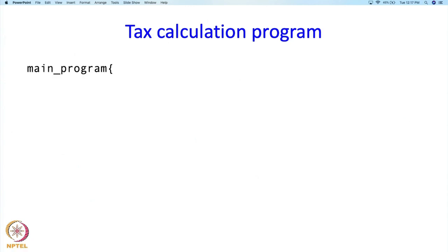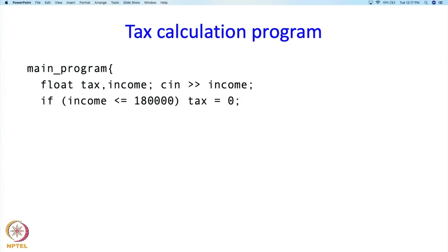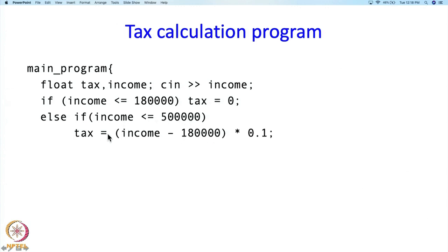So what about our tax calculation program? Now you should be able to write it. As before, we have variables tax and income, and we read in the income. If income is less than or equal to 180,000, we say tax is 0. Now we use the more general if statement. Else if — meaning if the first condition is false — we check: if income is less than 500,000, then tax equals 10% of the income in excess of 180,000. This expression executes only when income is above 180,000 but less than 500,000, exactly as we wanted.